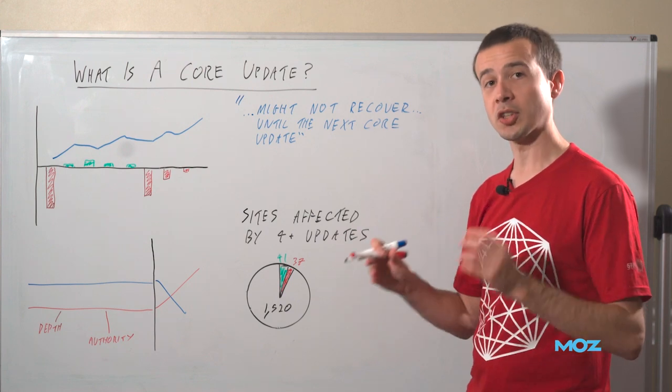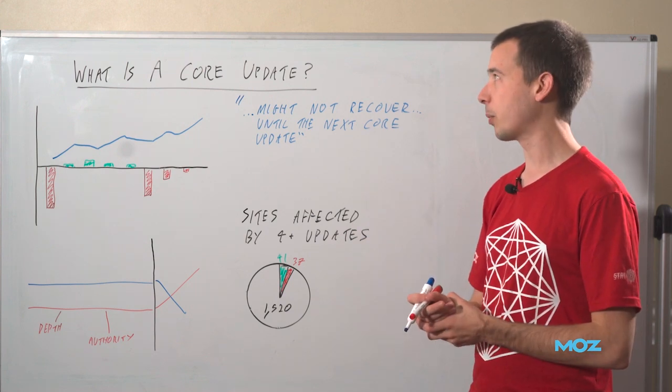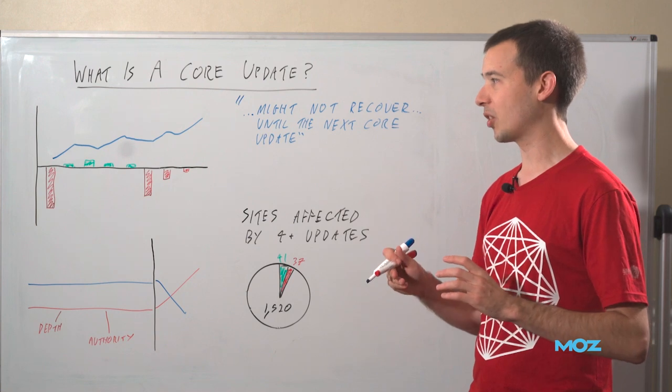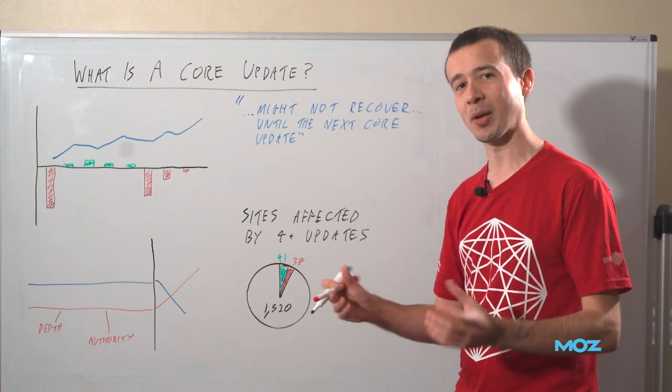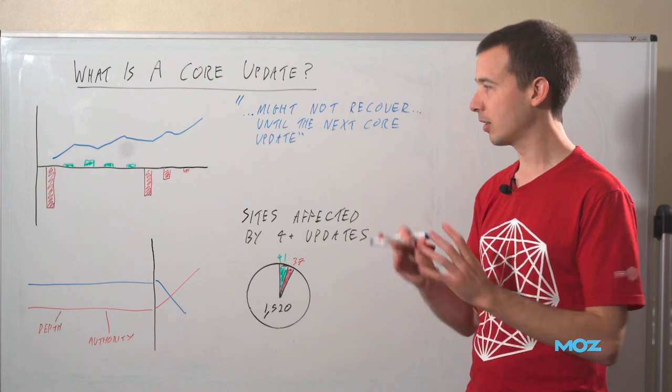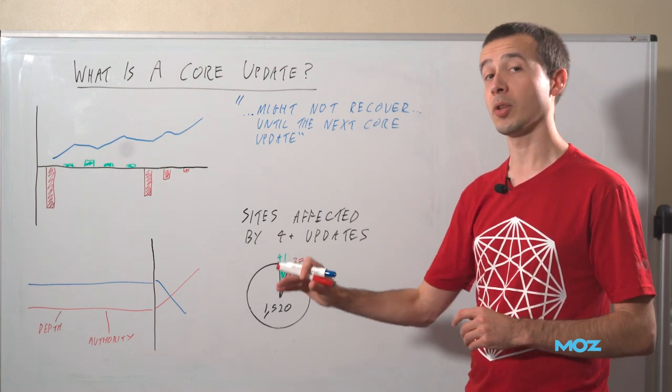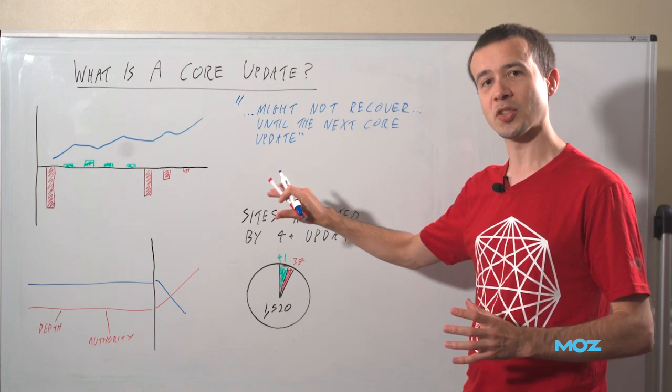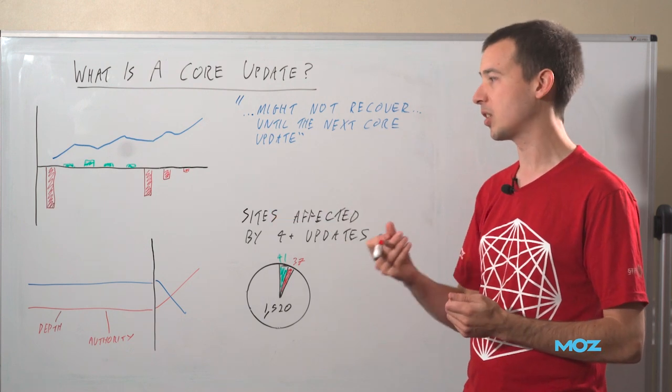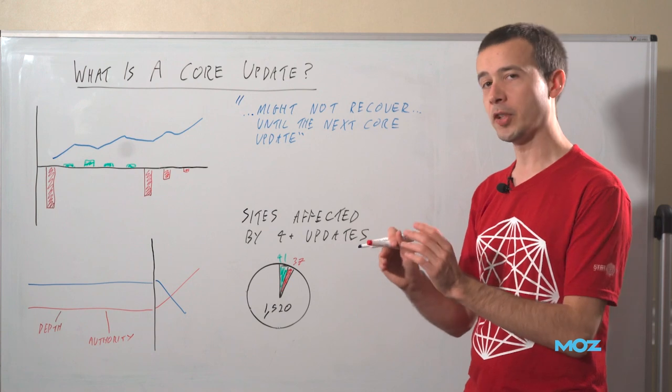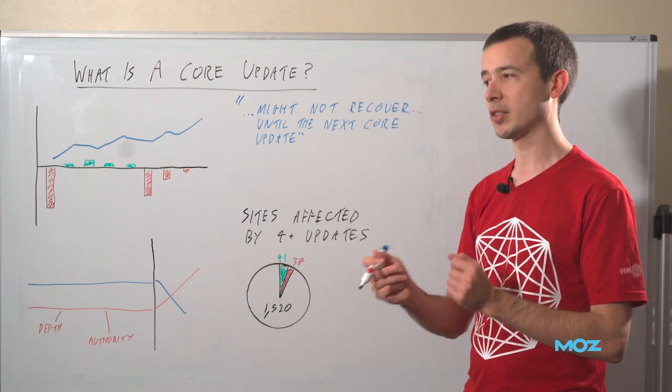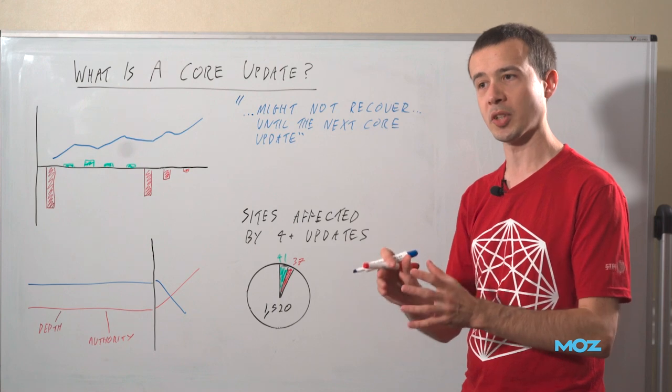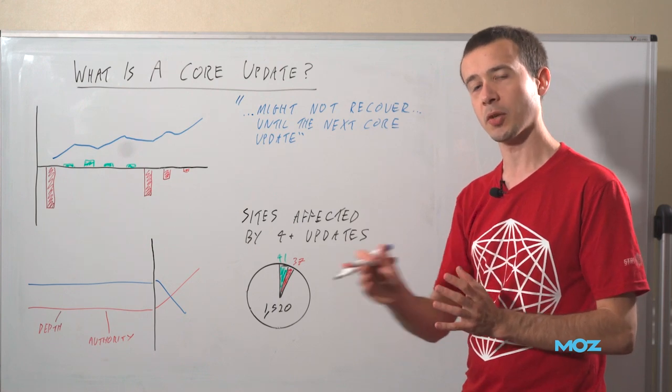So I hope that was interesting. That's just a few different ways to think about core updates besides the usual messaging that we get, which is very consistently just eat good content. I'm not saying you shouldn't do those things. Those are important. This longer term trend that you get with a lot of sites that do do those things shows how important it is. But I think when you look at individual updates, you have to keep in mind that it's not necessarily that Google is suddenly optimizing for these things more. They're just iterating over time.